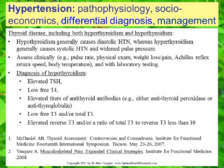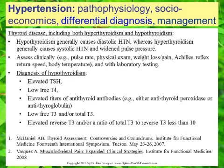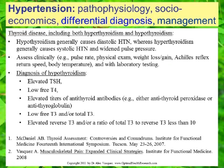The assessment of hypothyroidism begins clinically — we look at pulse rate, physical exam, weight changes, the Achilles reflex return speed, and body temperature, as well as laboratory testing. To diagnose hypothyroidism, relevant criteria include an elevated TSH, low free T4, and elevated titers of antithyroid antibodies, whether antithyroid peroxidase or antithyroid globulin.